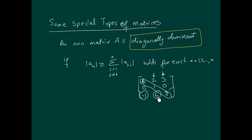Not only the remaining entries, but the sum of the remaining entries. So this plus this should be less than or equal to this. This must be bigger than or equal to the sum of the absolute values.